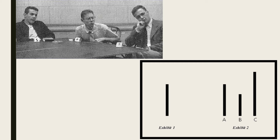However, in Asch's experiments he would have subjects say one at a time which line they thought matched. There was only one real subject in the experiment, and that person was always the last one to answer. What Asch discovered was that about 75% of the people went along with the bad judgment of the group, even though they probably knew the group was wrong. This was groundbreaking, because most people would have thought that people wouldn't conform in a situation like that — but clearly they did.